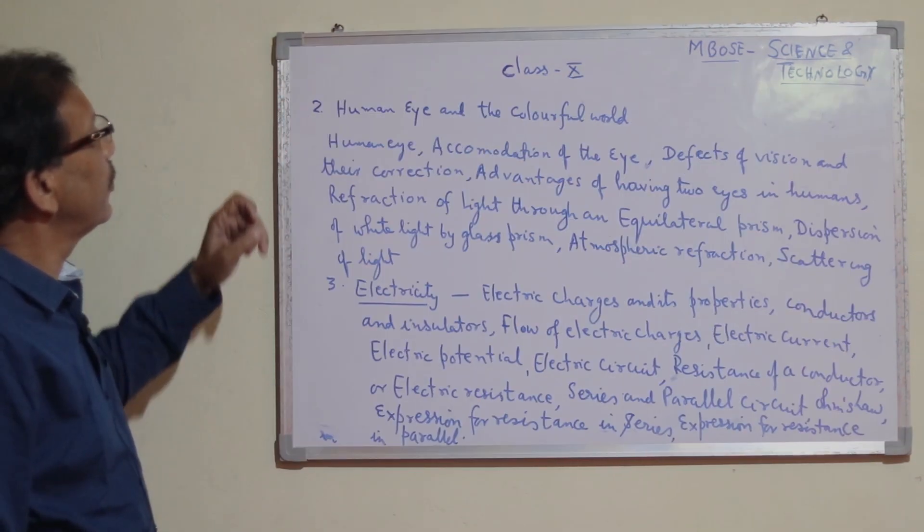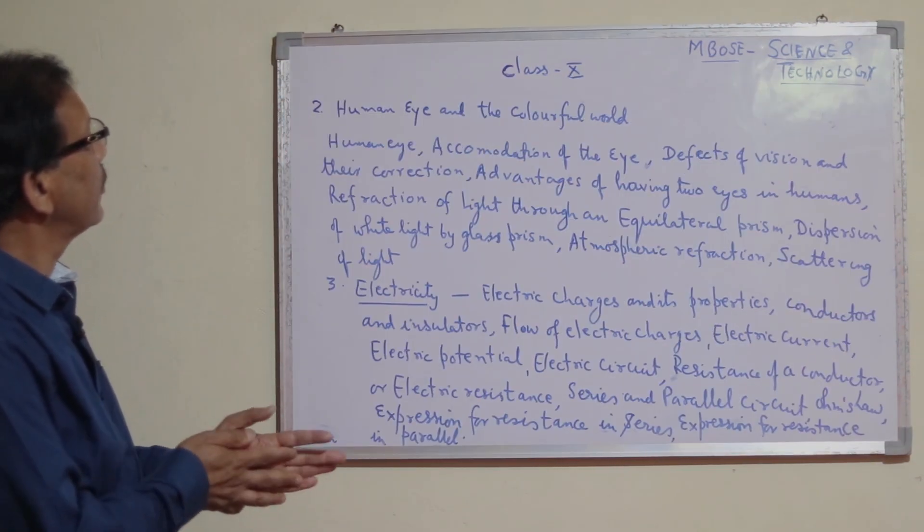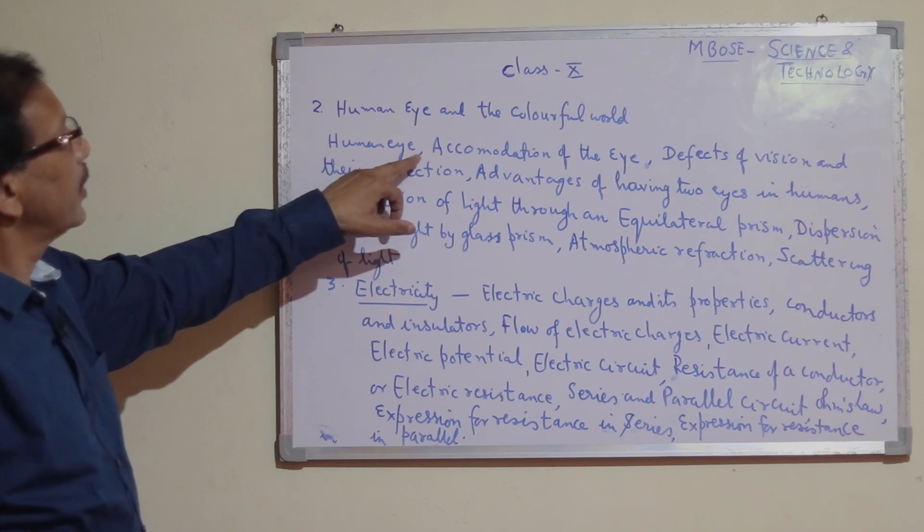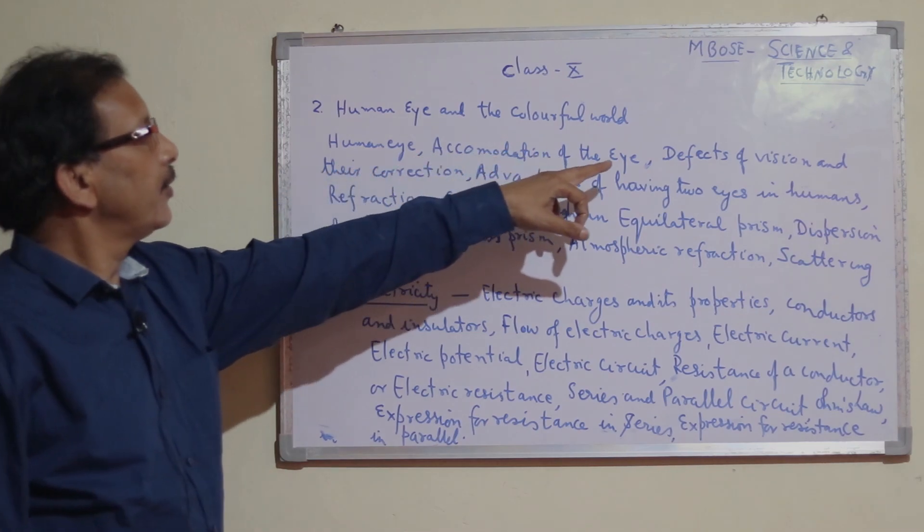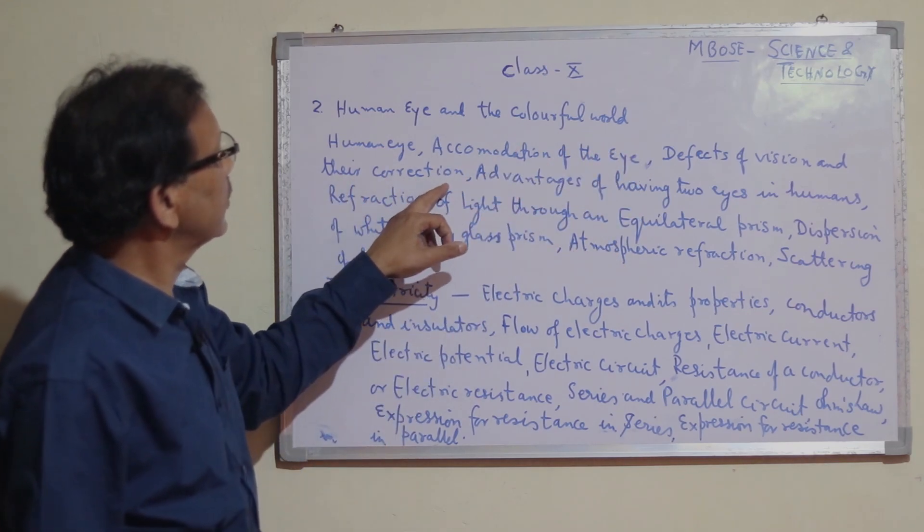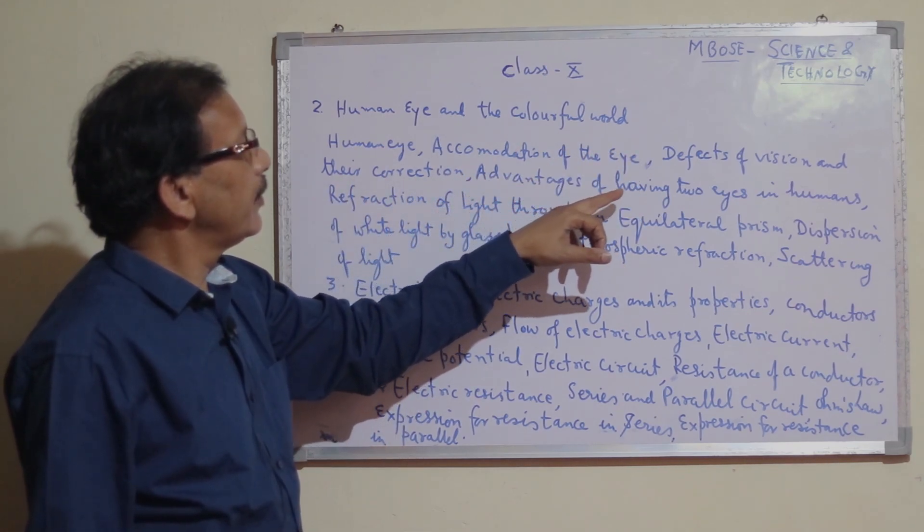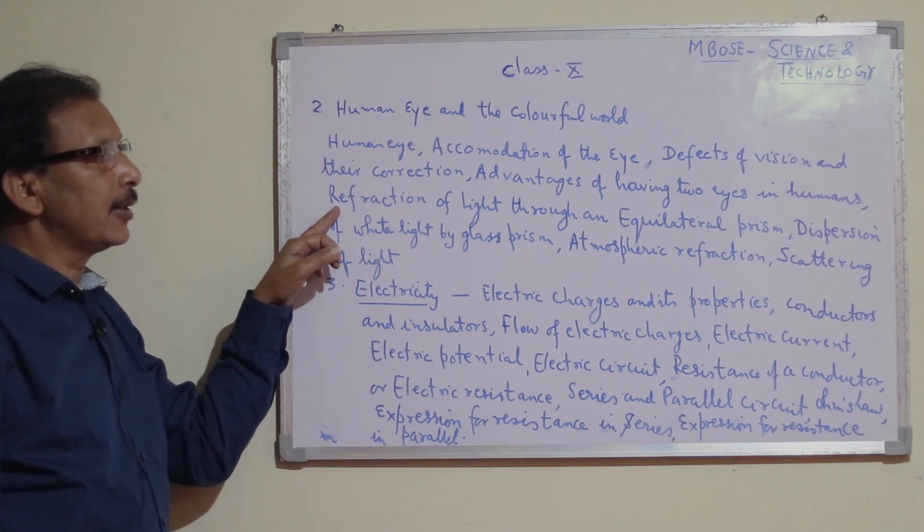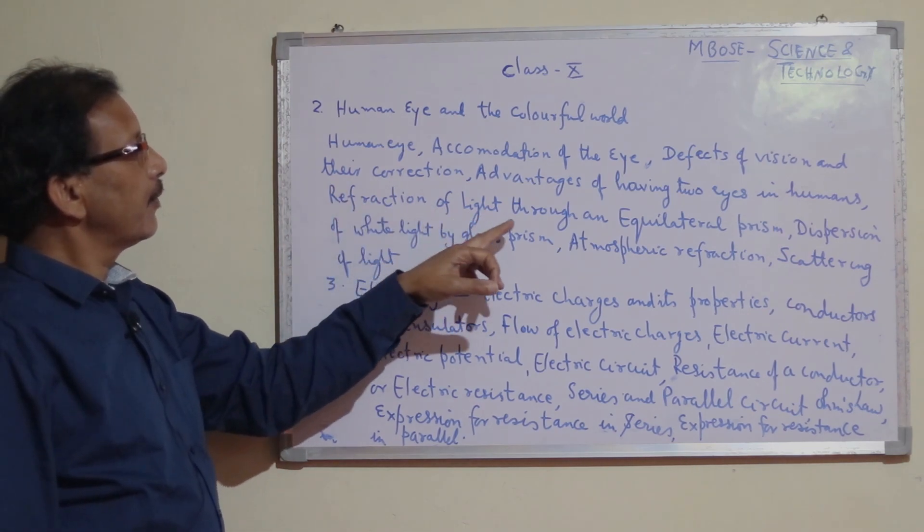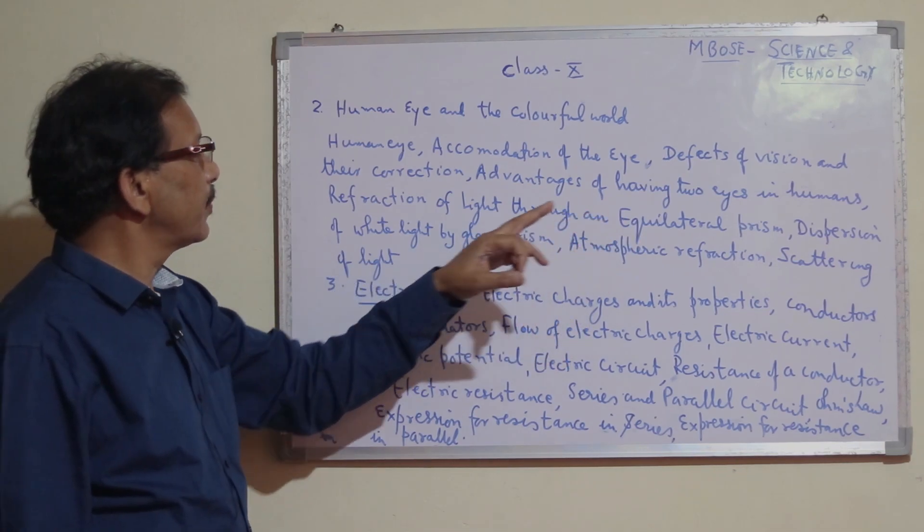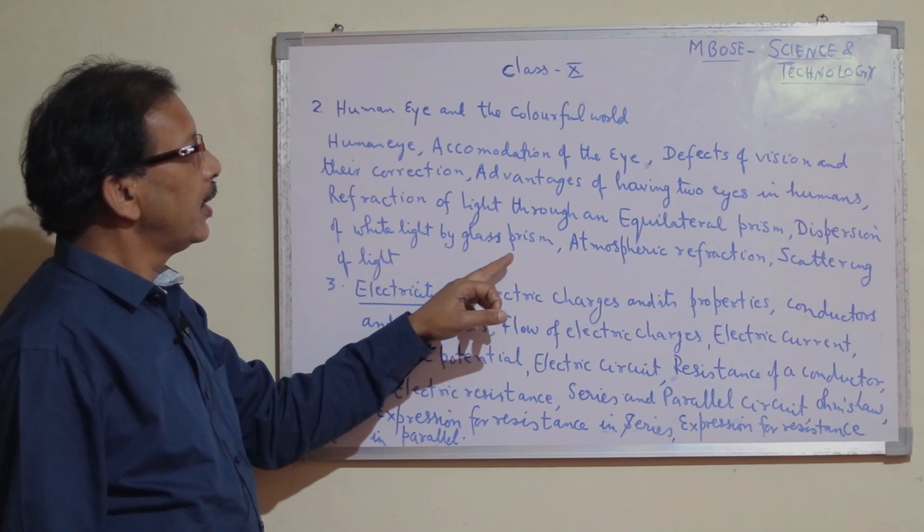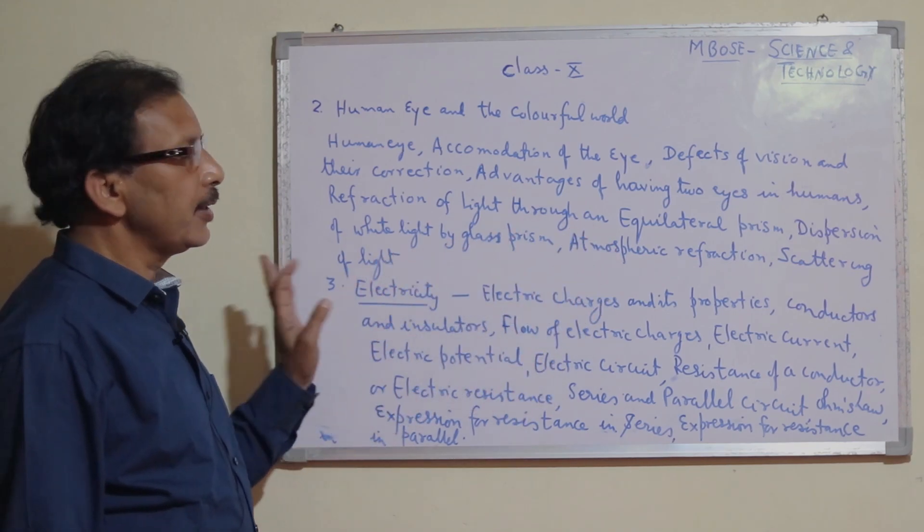Second is human eye and the colorful world. In this chapter we study human eye structure, function of human eye, accommodation of the human eye, defects of vision and their correction, advantages of having two eyes in humans, refraction of light through an equilateral prism, dispersion of white light by glass prism, atmospheric refraction, and scattering of light.